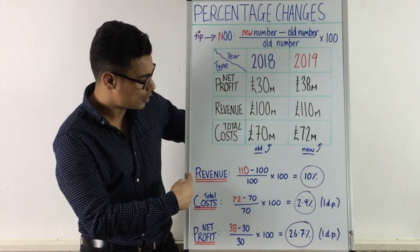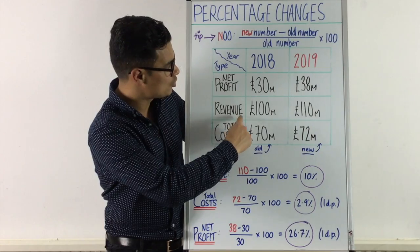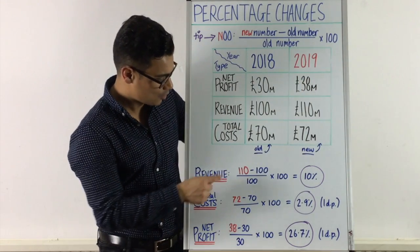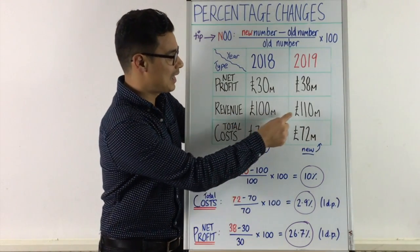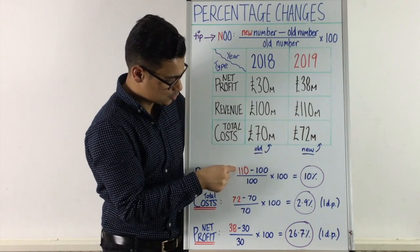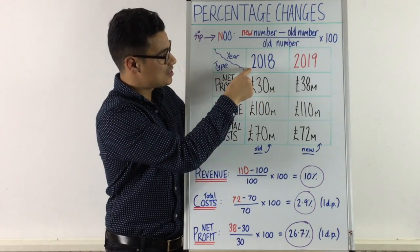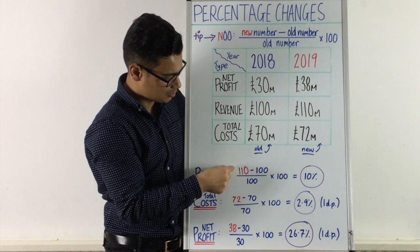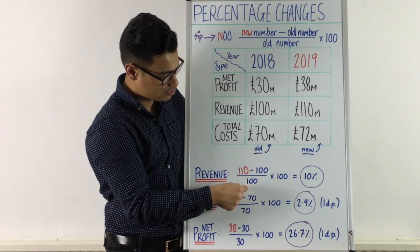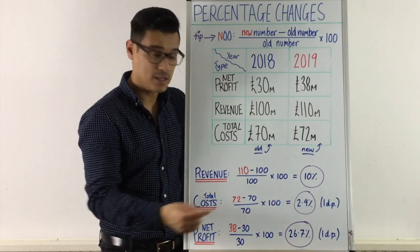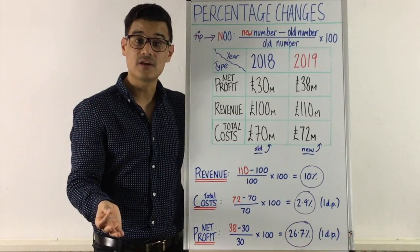So revenue — NUUU. The new number when looking at revenue and calculating the percentage change between 2018 and 2019: we take the new number, which is the future number, so 2019, the latter number — that's 110. Then we minus the old number, which is 2018 — that's 100. So 110 minus 100, divided by your old number, 100, then times by 100. If you do the maths, it comes to 10.